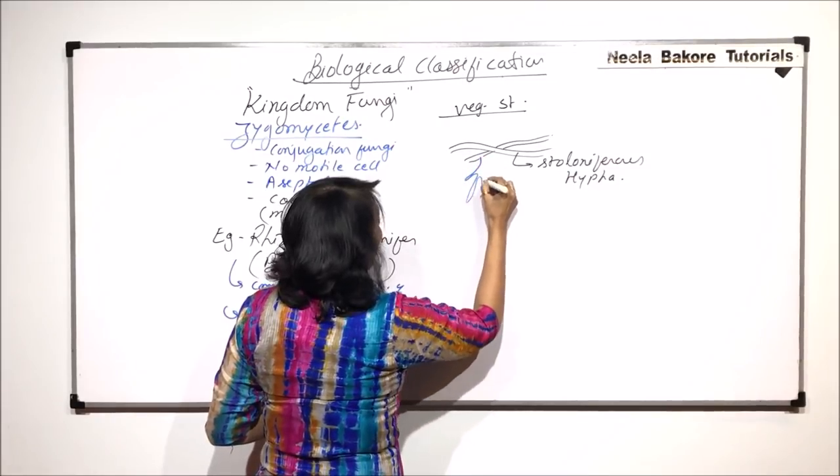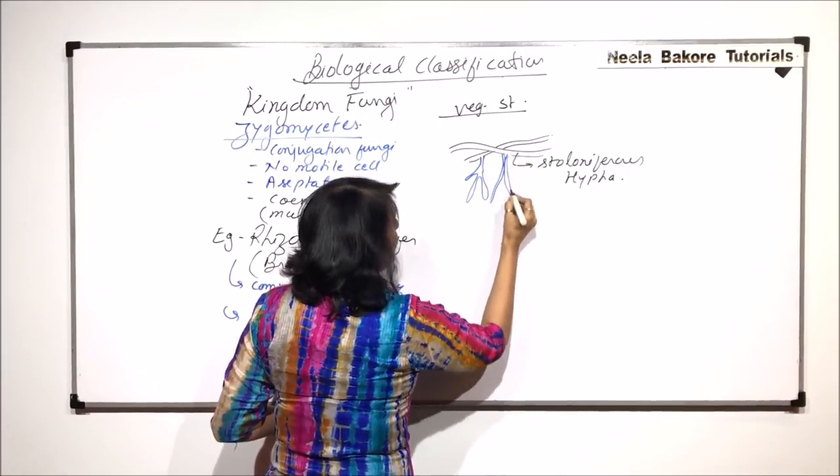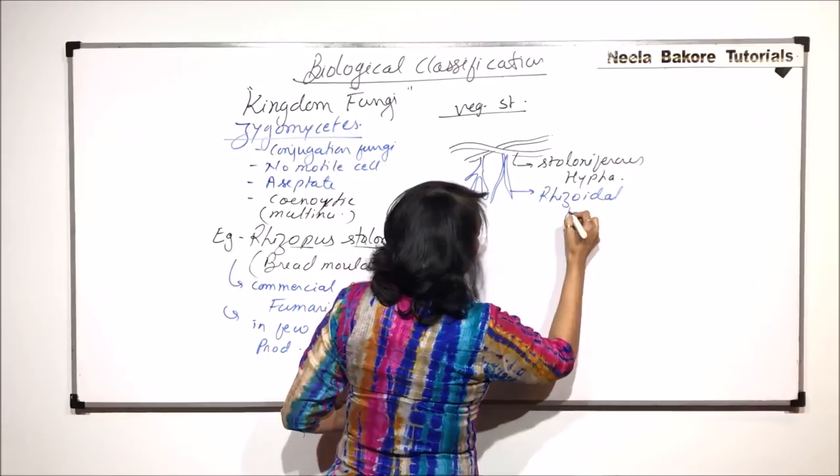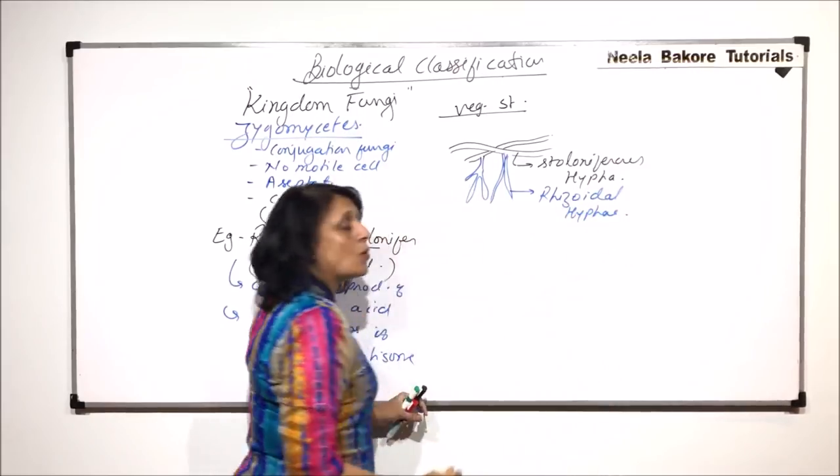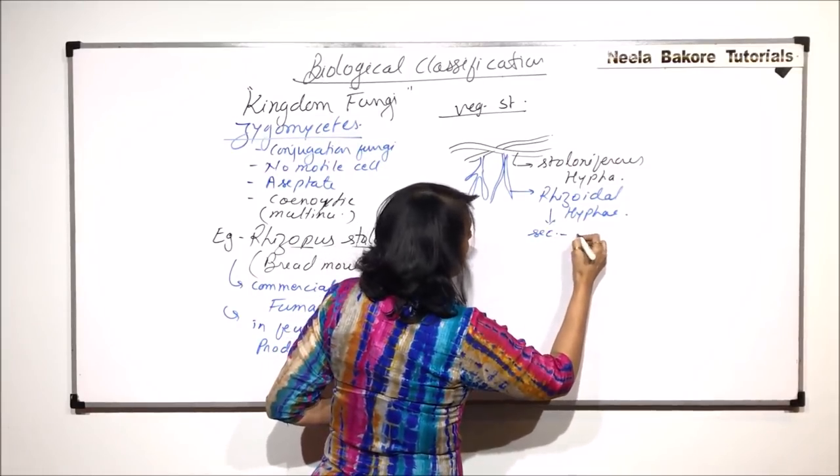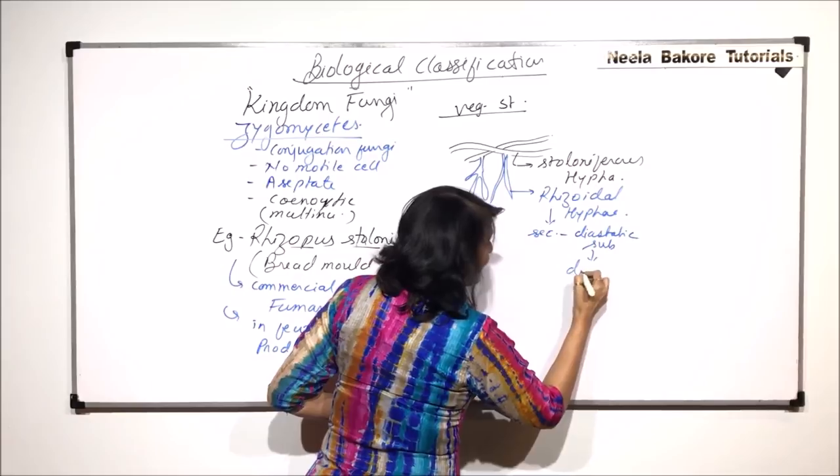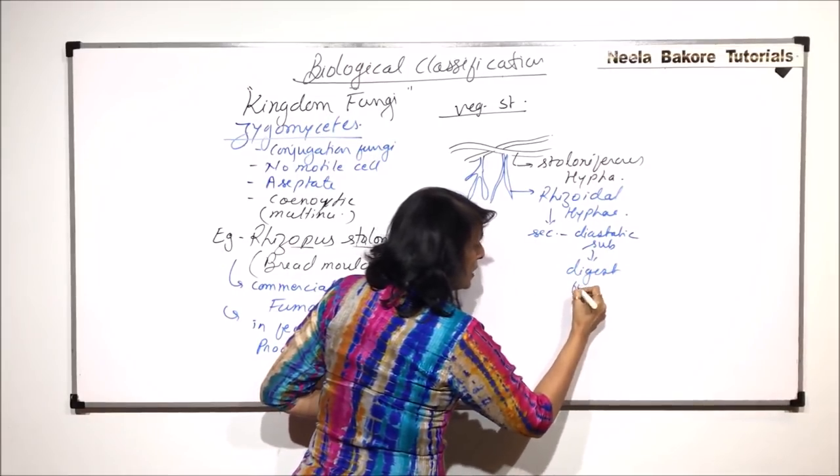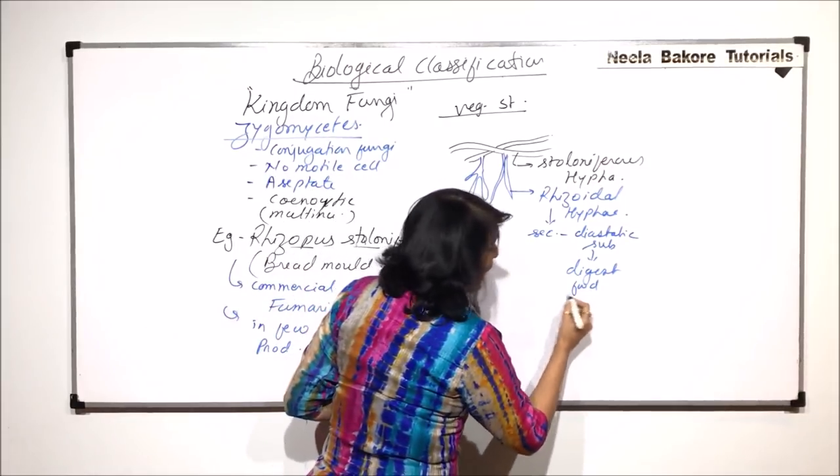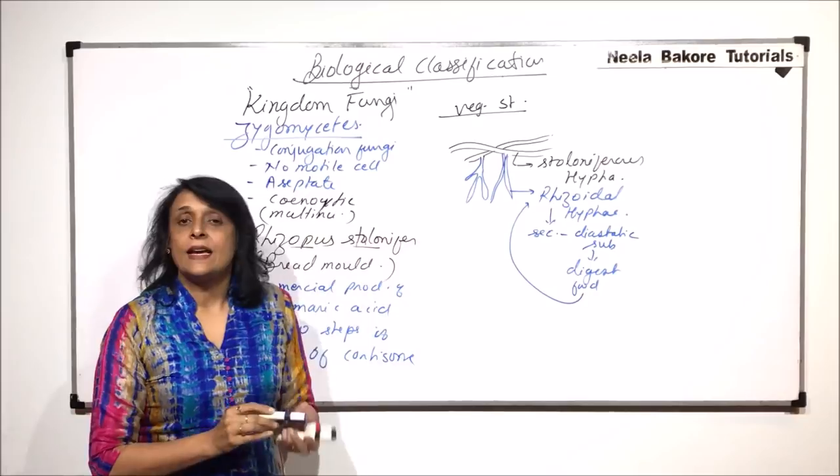Arising from these stoloniferous hyphae are few hyphae which grow on the lower side and these are known as the rhizoidal hyphae because they are going to act like the roots for absorbing. These rhizoidal hyphae secrete a substance that is called diastatic substance and this digests the food. It converts the insoluble carbohydrate into a soluble carbohydrate and then this digested food is absorbed by these rhizoidal hyphae.